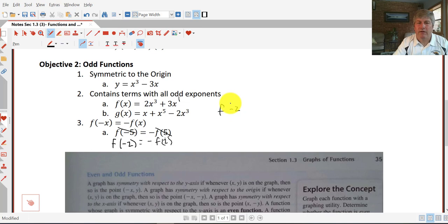so f of negative 2 equals negative 2 cubed minus 3 times negative 2. So we have negative 8 plus 6 equals negative 2. So that's going to be the same as I put in, if I input the opposite of f of 2.